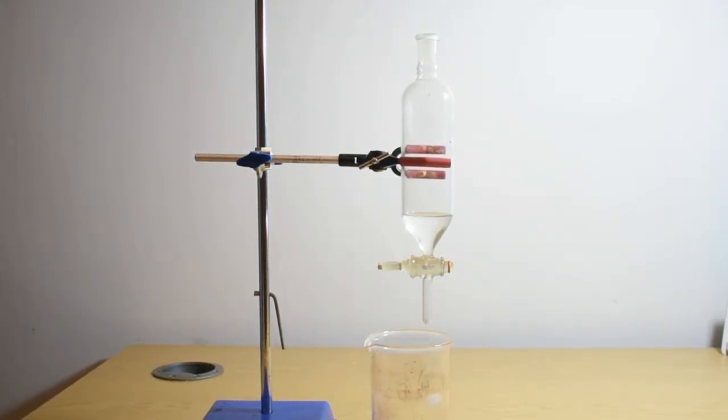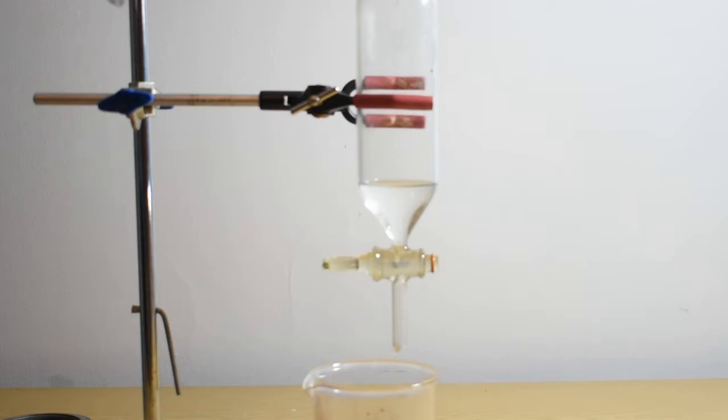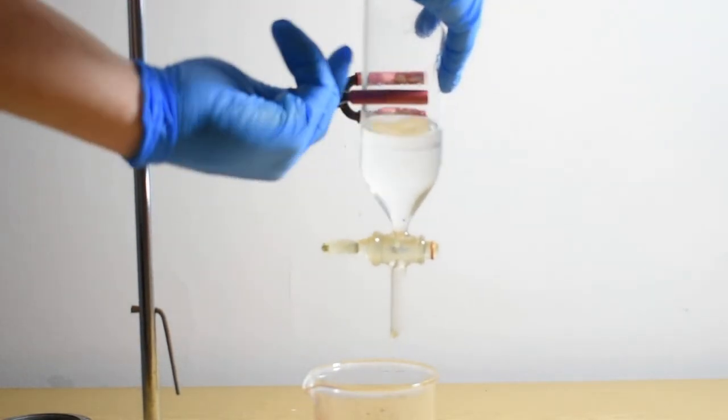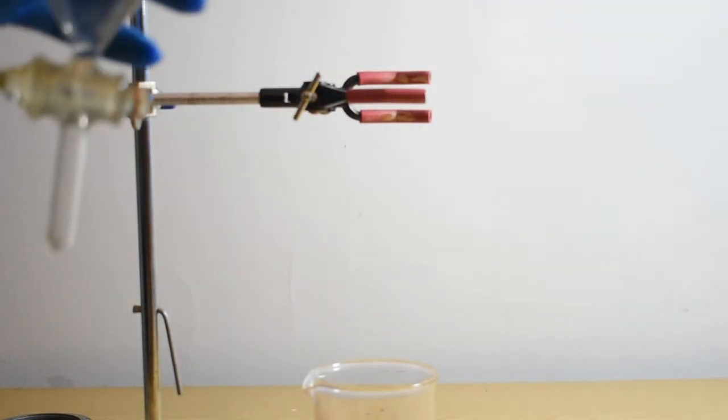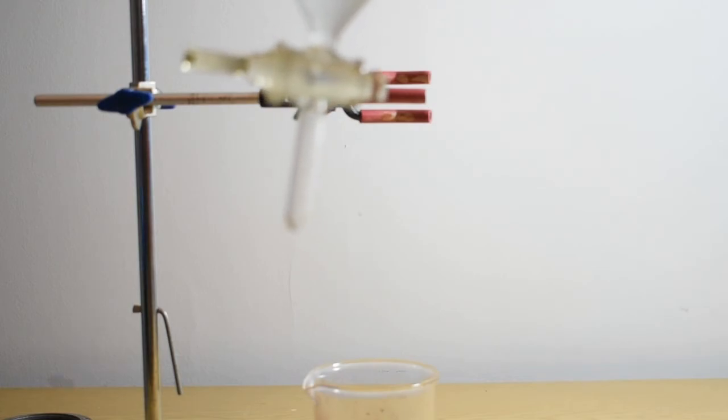Now that the distillate is in a separatory funnel I can begin the washing steps. First I add 50 milliliters of saturated sodium carbonate solution. This should react with any acids, either ethanoic or sulfuric, which distilled over with the distillate. The fizzing is the carbonates reacting with the acids releasing carbon dioxide.